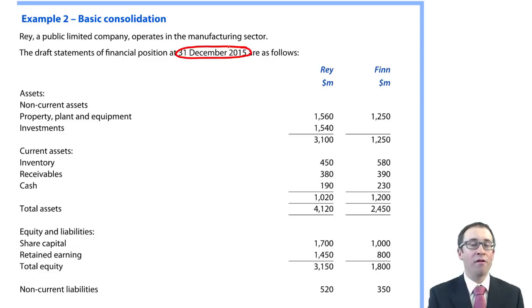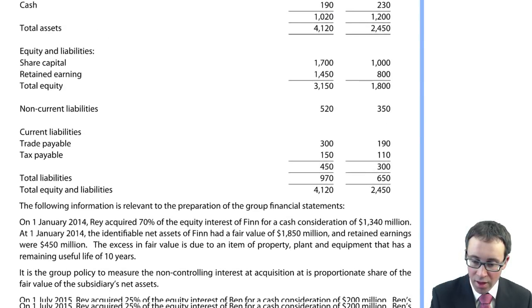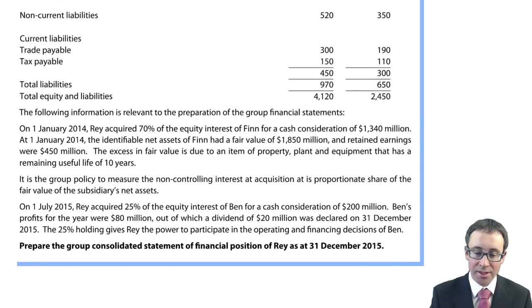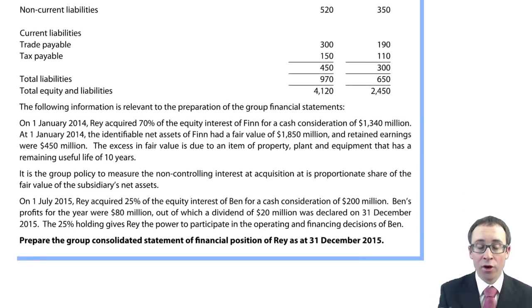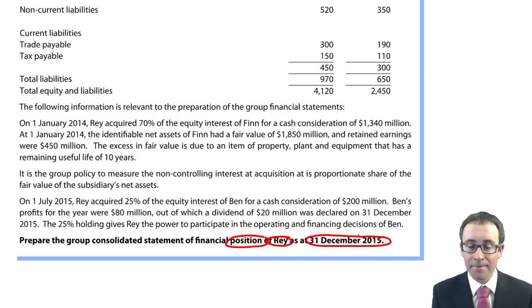You can see you've got Ray and you've got Finn. As yet, I don't know who the parent is, who the subsidiary is. The requirement says prepare the group consolidated statement of financial position. So it wants a position statement of Ray. Ray must be the parent and the year end is the 31st of December 2015.